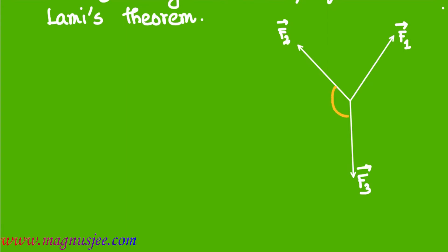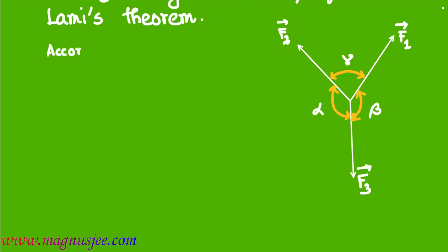The angle between the lines of action of forces F2 and F3 is alpha, and the angle between the lines of action of forces F1 and F3 is gamma. According to Lamy's theorem, these angles define the equilibrium relationship.